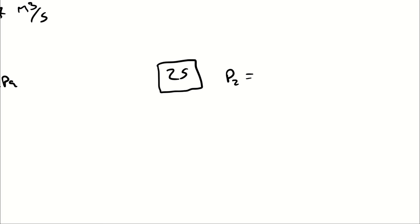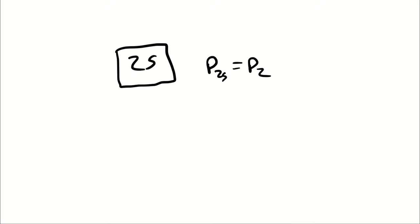So at state 2s, I have the same outlet pressure, because I'm assuming that the compressor is compressing it to the same pressure. I'm imagining a hypothetical situation where it's the same compressor, it just works perfectly, so the end pressure is the same. And because ideal compression is represented by an isentropic process, S2s is equal to S1.